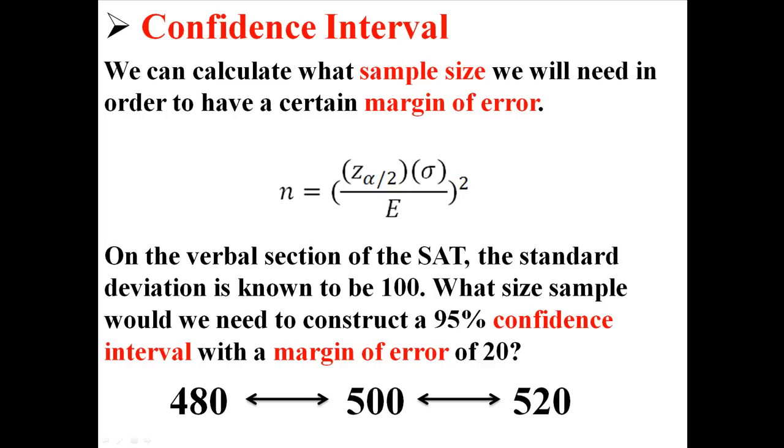Now, when I say margin of error of 20, I mean something like this. Let's say the mean is 500. We want that 500 to be 20 between the two numbers of the interval we've created. So here 480 and 520 are both 20 away from 500. That would be our interval. We'd be 95% certain it's between 480 and 520.